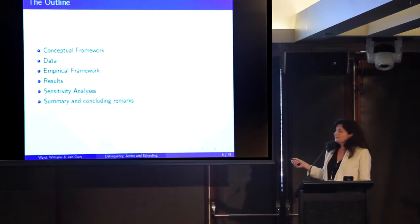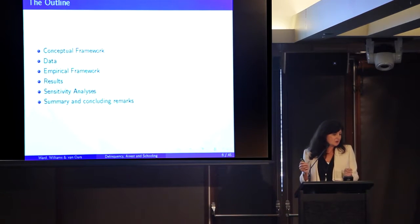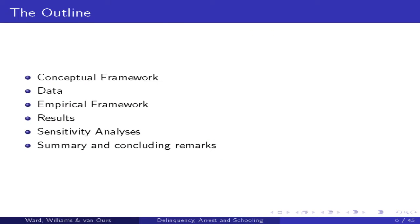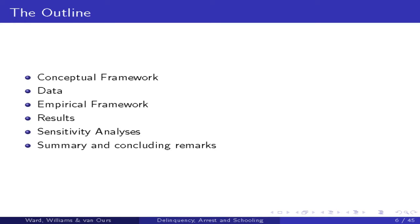Let me tell you where the rest of the talk is going. I'm going to start by outlining a conceptual framework from economics: a human capital accumulation process. Human capital, like physical capital, is productive. You usually think of human capital as education or experience that makes you better at your job — similarly, criminals gain experience and get better in their job. I'm going to talk at length about the data, because data is everything to me. This is based on the National Longitudinal Survey of Youth 1997. I'll then talk about an empirical framework, results, and sensitivity analysis.